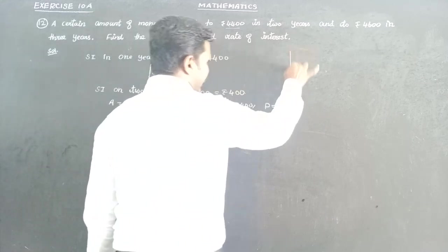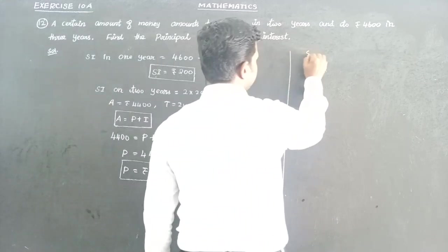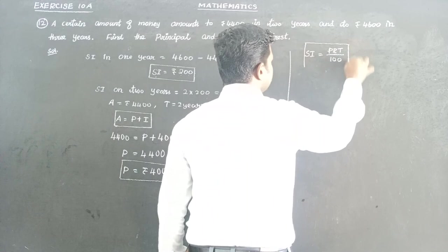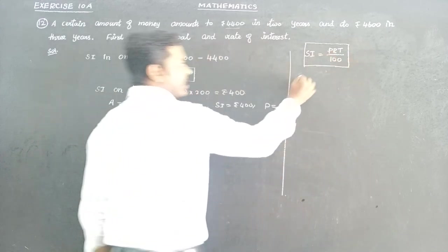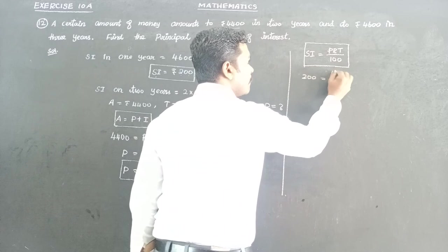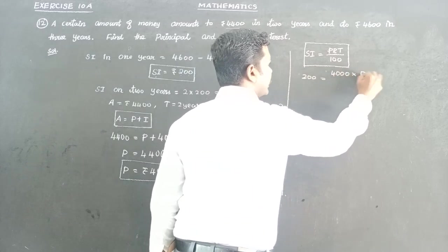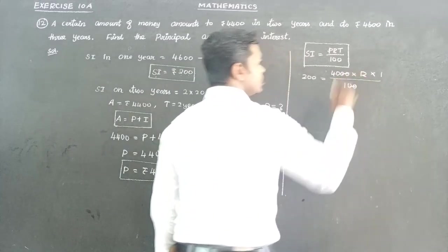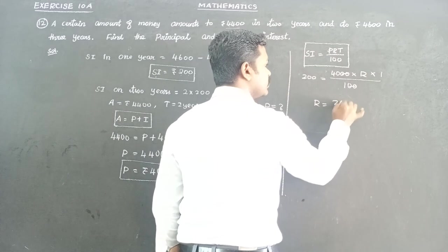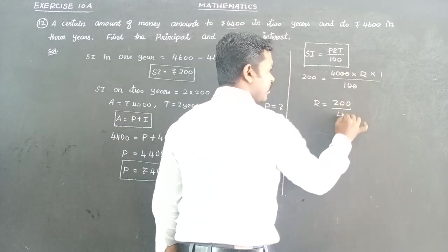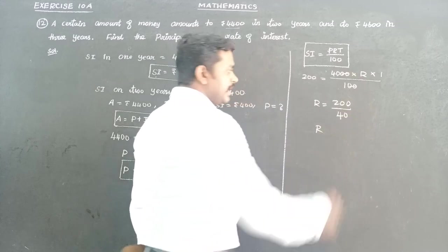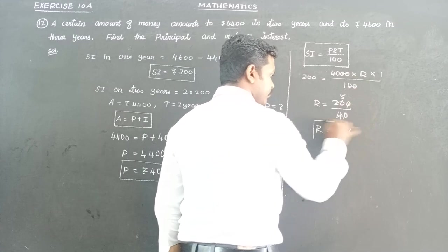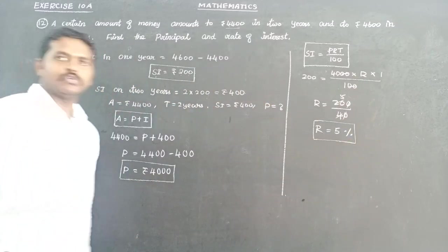Now for the rate of interest, using the formula SI = PRT divided by 100. Simple interest for 1 year is 200, principal is 4,000, time is 1 year. So 200 = 4,000 × R × 1 divided by 100. Therefore rate of interest R is equal to 200 × 100 divided by 4,000, which equals 5%. So the rate of interest is 5% and the principal amount is rupees 4,000.